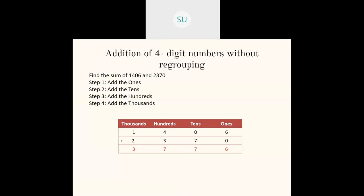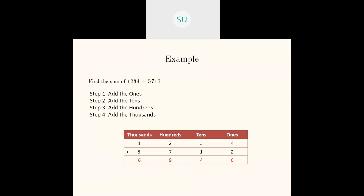Here is an example: 1,406 plus 2,370. When you add these numbers together you get a total of 3,776. And another example: 1,234 plus 5,712. First you add ones, then tens, then hundreds and thousands. When you add them together you get a total of 6,946.